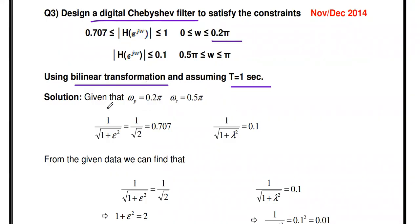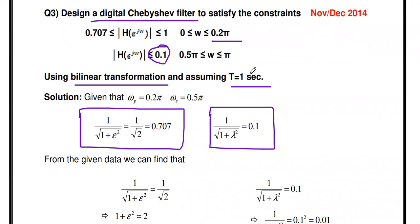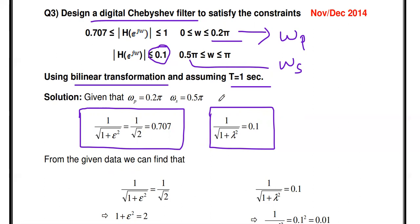First we have to note down the given data. What is 0.707? This 0.707 is nothing but 1 divided by square root of (1 + ε²). Similarly, 0.1 is nothing but 1 divided by square root of (1 + λ²). The frequency 0.2π is the passband frequency ωp and 0.5π is the stopband frequency ωs. So ωp = 0.2π, ωs = 0.5π, 1/√(1+ε²) = 0.707, and 1/√(1+λ²) = 0.1.